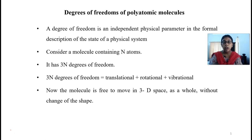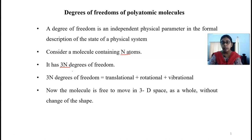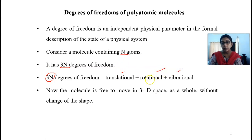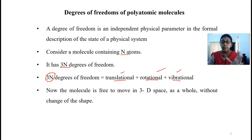If we look at a molecule, how many degrees of freedom are possible? If that molecule has N atoms, it can have 3N degrees of freedom. The molecule which has N atoms will have 3N degrees of freedom, and all these 3N degrees of freedom will be the sum of translational, rotational, and vibrational degrees of freedom.